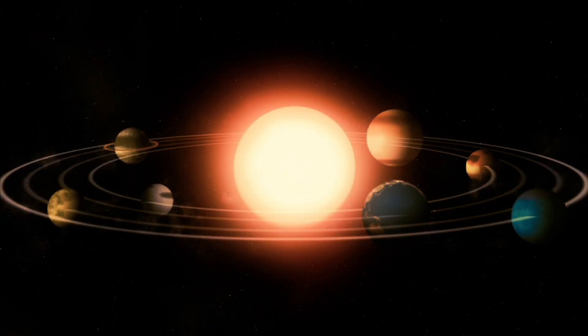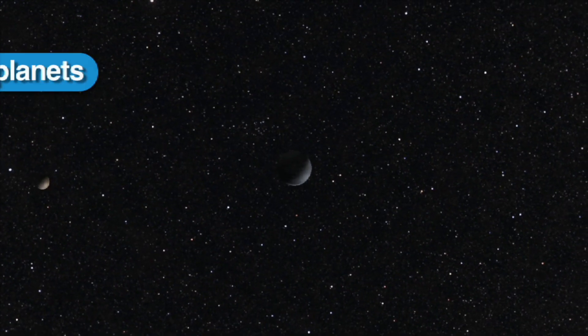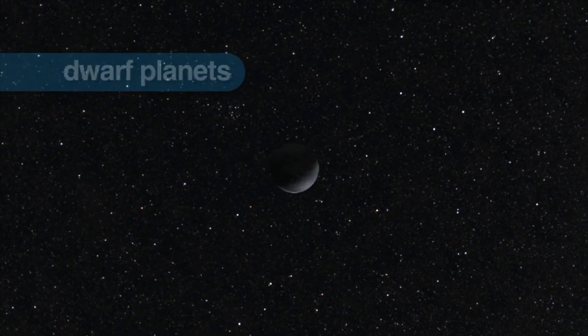In addition to the solar system's eight planets, scientists have identified dwarf or minor planets, one of which is Pluto.